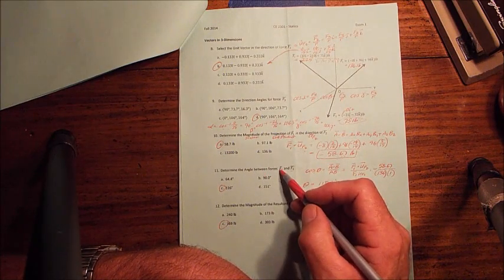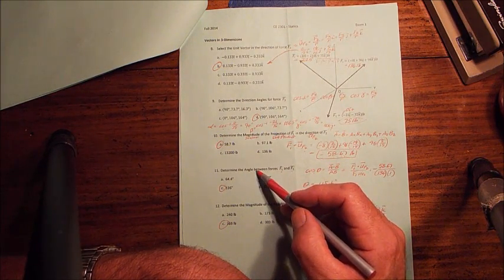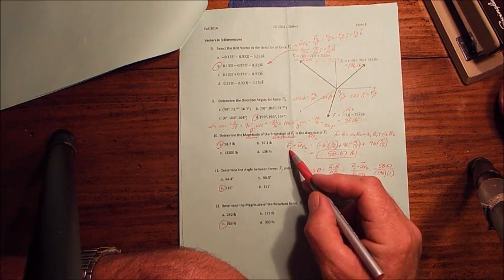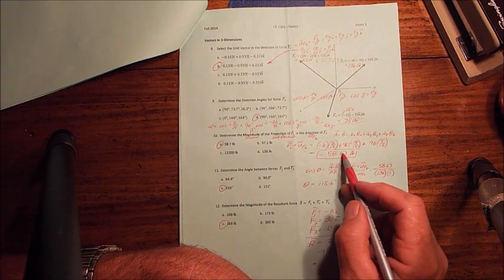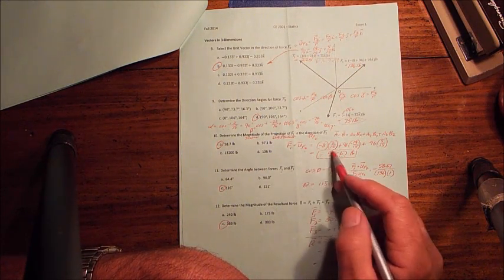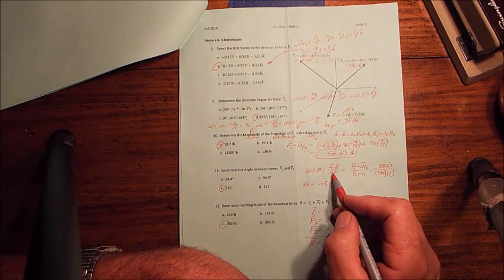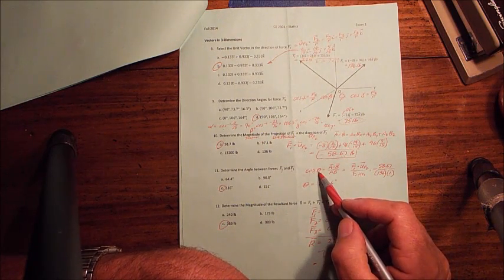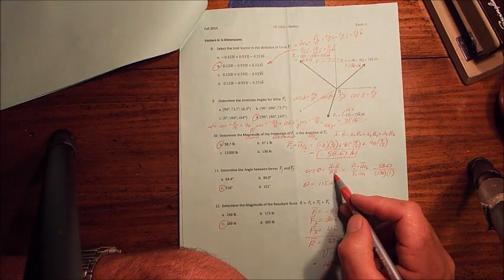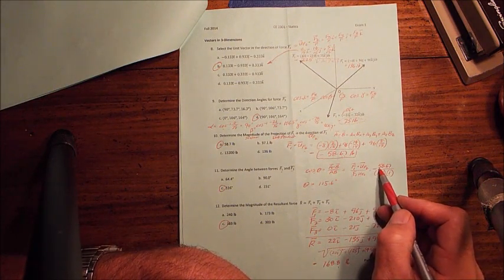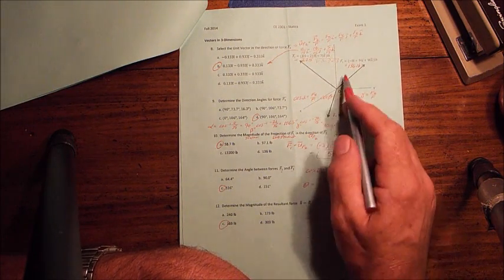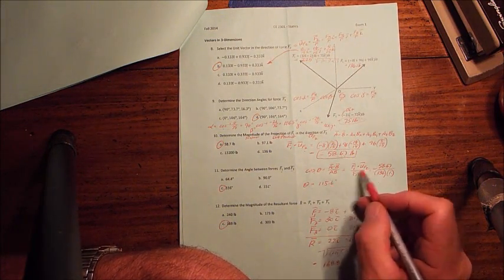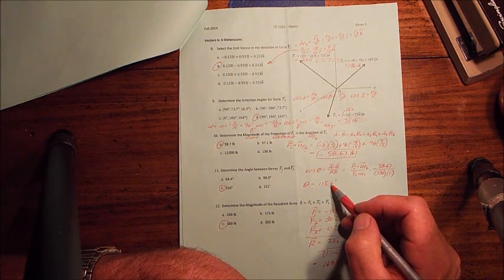In a related way, number 11 wants to know the angle between. Angle between means dot product of f1 and f2. The angle between f1 and f2 is the same as the angle between f1 and uf2. I've already got f1 dotted with uf2 up here, so I just need to divide it by its magnitude. Cosine of theta is the dot product divided by the magnitudes. The dot product was negative 58.67, the magnitude of f1 is 136, the magnitude of the unit vector is 1. Take the cosine inverse, and I get 115.6 degrees.